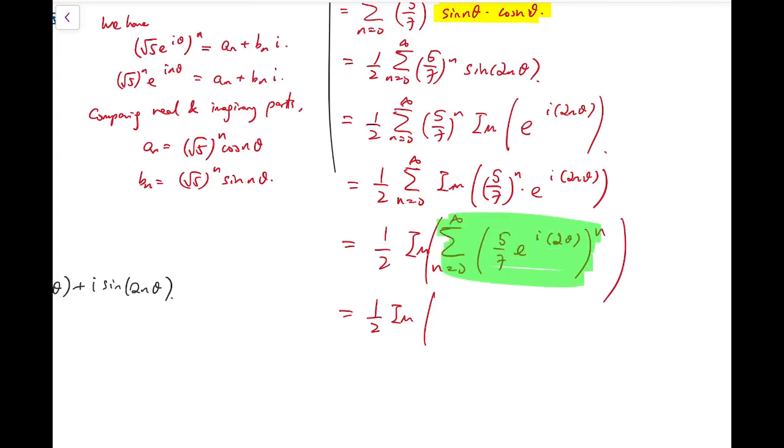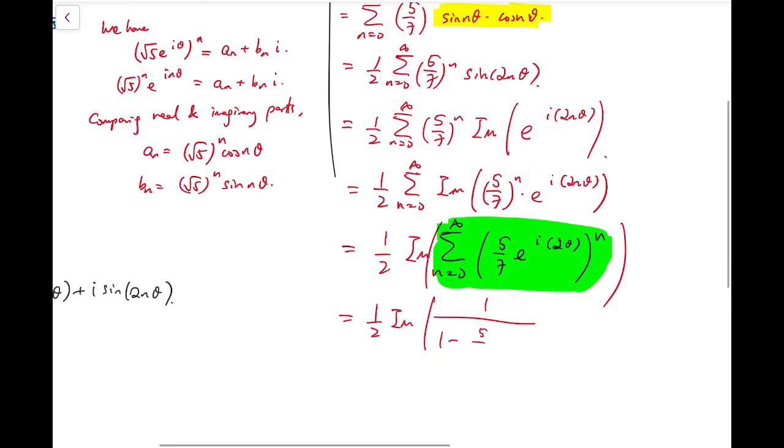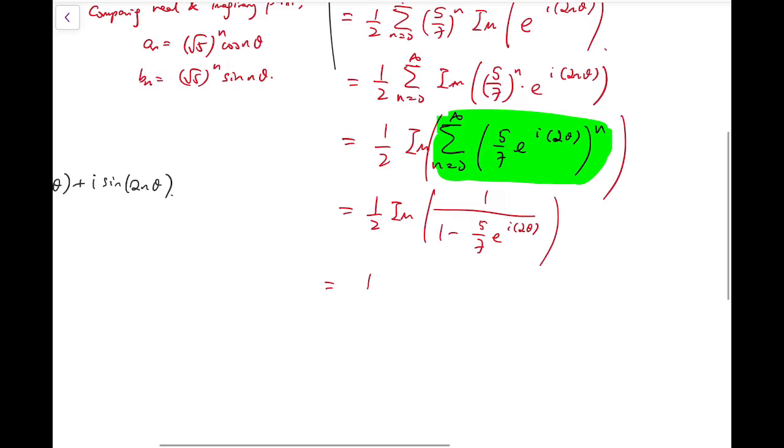The term has modulus 5/7, which is between -1 and 1, so I can apply the infinite geometric series formula. The first term is 1, and the common ratio is 5/7·e^(i·2θ).